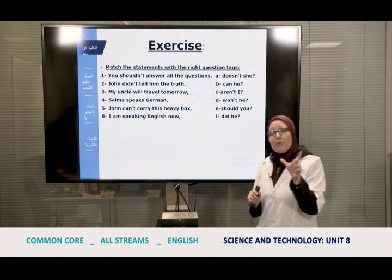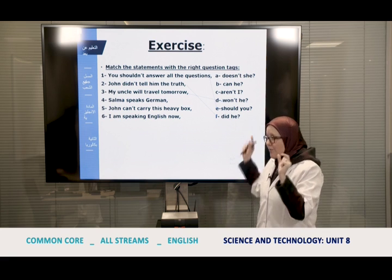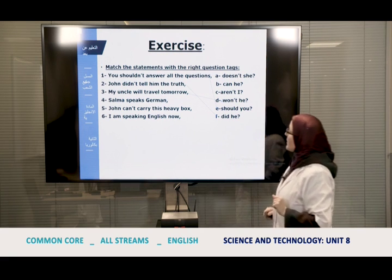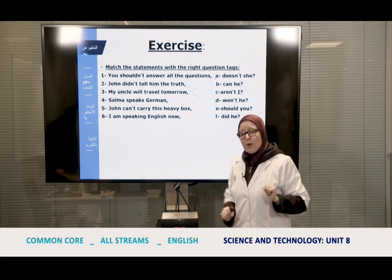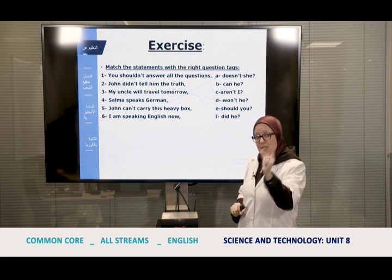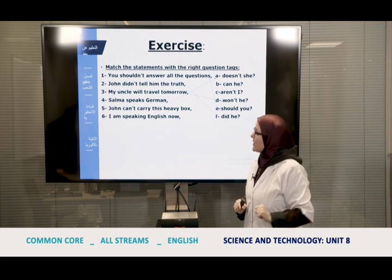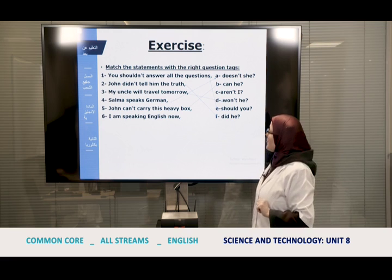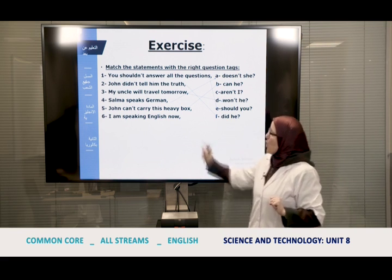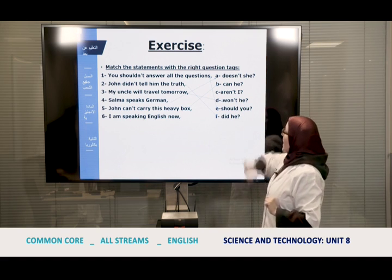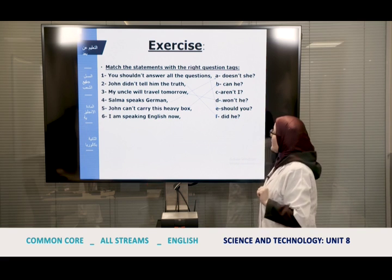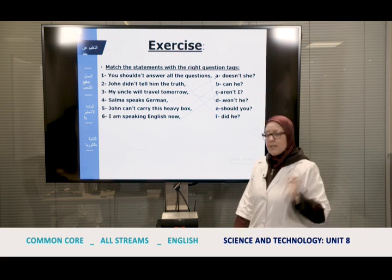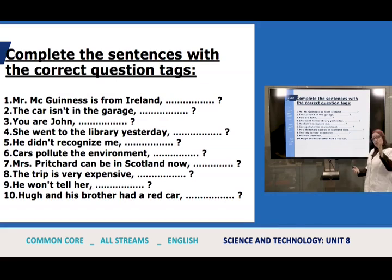Note: in question tags we always use the short contraction form — we cannot say 'is not she,' only 'isn't she.' Number four — 'Selma speaks German' — in simple present, the negative of 'speaks' uses the auxiliary 'doesn't,' so the tag is 'doesn't she?' Number five — 'John can't carry this heavy box, can he?' Number six — the exception: 'I am speaking English now, aren't I?'